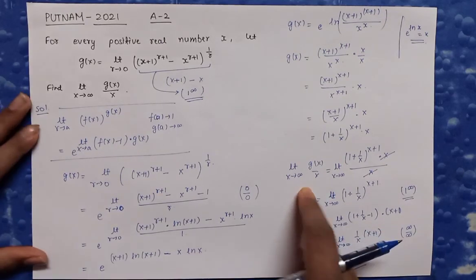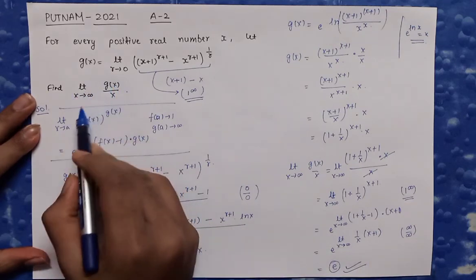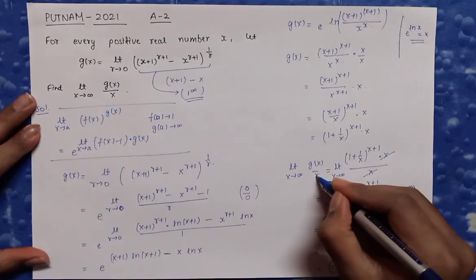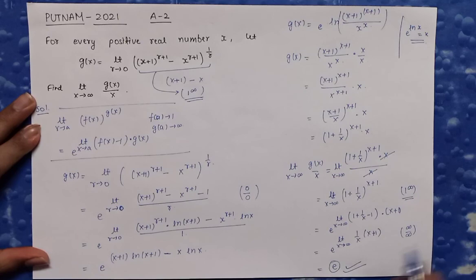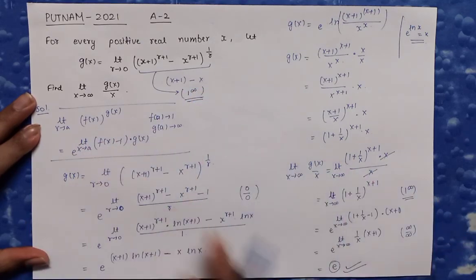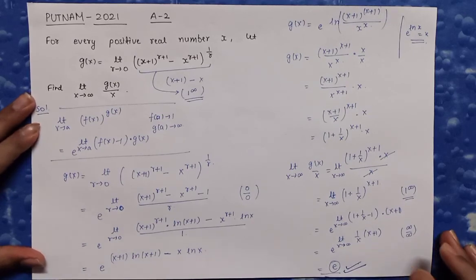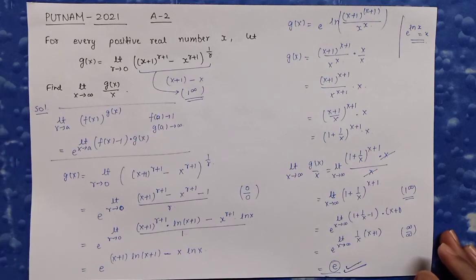So we have found the answer: the limit as x tends to infinity of g(x)/x = e. The key insight was recognizing and applying the 1^∞ formula at the right places. I hope you understand this solution. If you enjoyed it, please like the video and subscribe to my channel for more such videos. Thanks for watching.